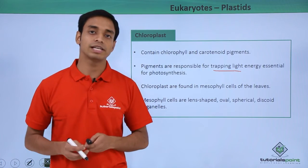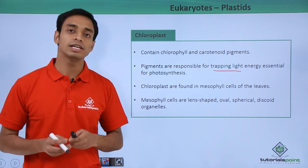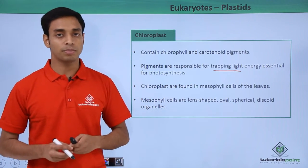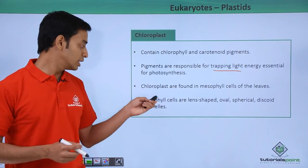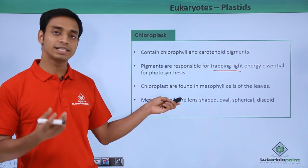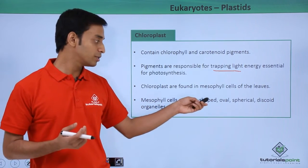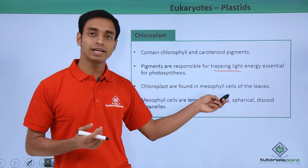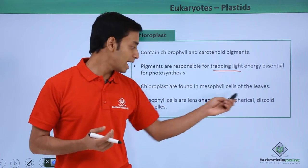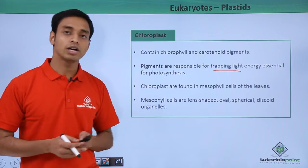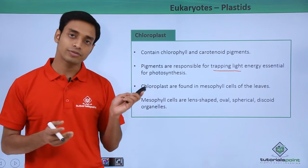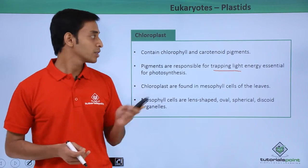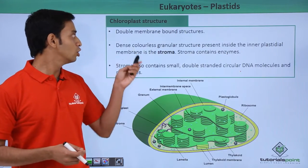Chloroplasts are mostly found in cells known as mesophyll cells, which are found in the leaves of plants. These mesophyll cells are lens-shaped — they are oval, spherical, and discoid organelles found in the leaves of the plants.